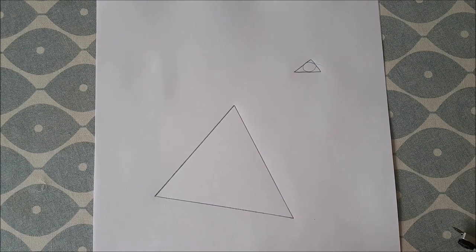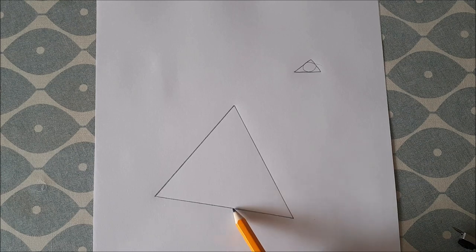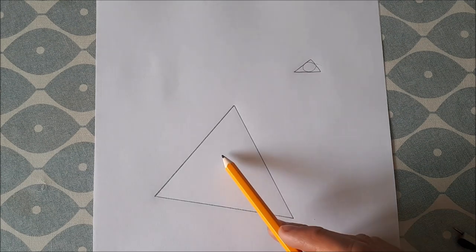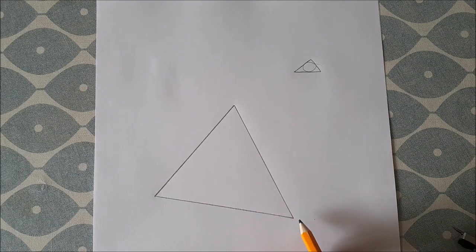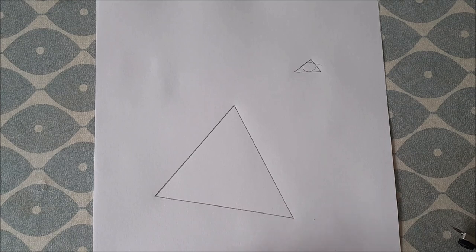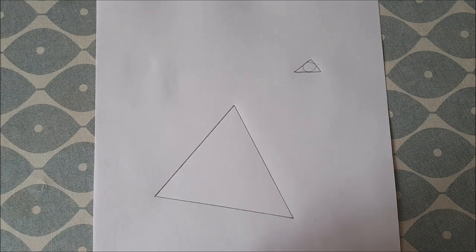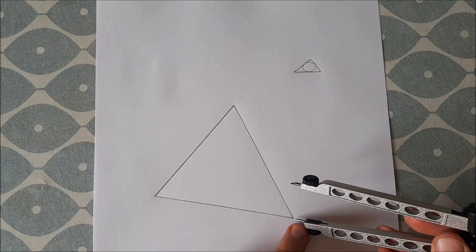To draw the incenter, which is what we need to draw first, we bisect two of the angles. We draw the bisector of two angles, and where they meet that'll be our incenter. From there we can draw our incircle.